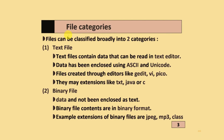File Categories are broadly classified into two categories: Text Files and Binary Files. Text Files contain data that can be read in text editors, and data is encoded using the ASCII or Unicode character set. Files are created through editors like gedit, vi, pico, and others. Common extensions include .txt, .java, .c, and others.